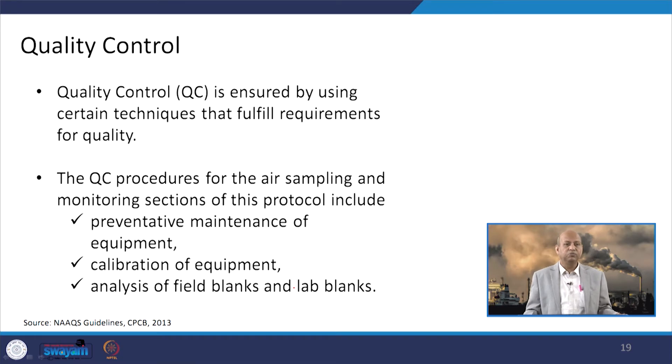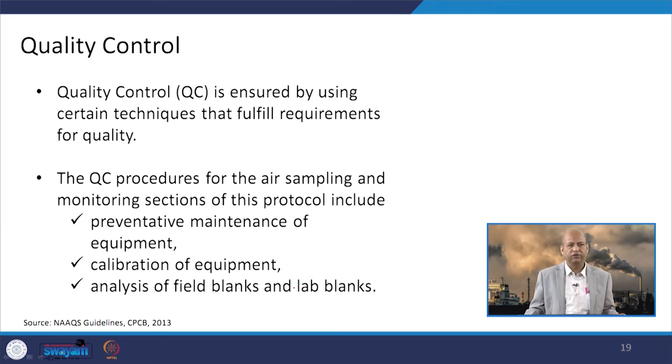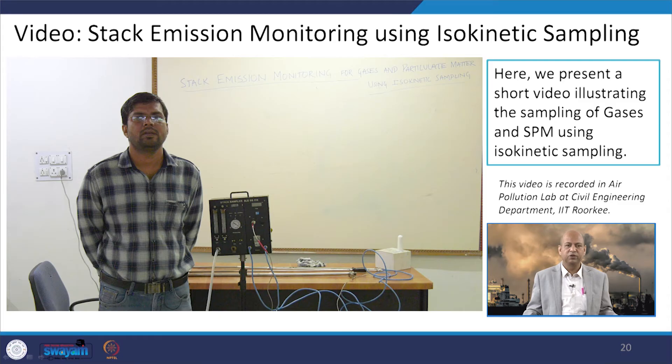Quality control is important. As seen in each experiment, we must follow strict guidelines, mandatory procedures, and protocols to ensure quality — otherwise the monitoring values and calculations may differ from the real ones. We now present a short video that will give better perspective on how sampling of gaseous components or particulate matter is done using the isokinetic sampling method. This video was recorded in the air pollution laboratory of the Civil Engineering Department, IIT Roorkee.